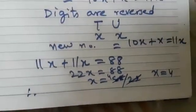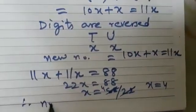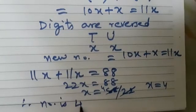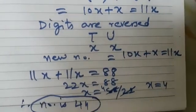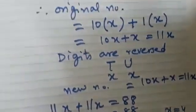So what is the required number? Therefore, the number is, original number is 44. I hope the question is clear to you.